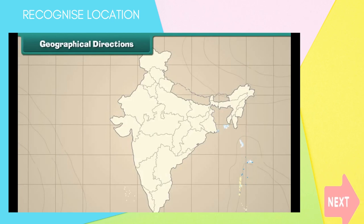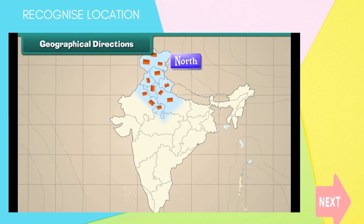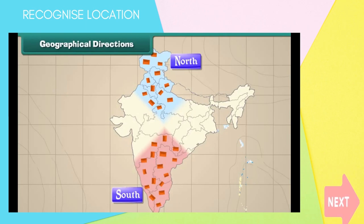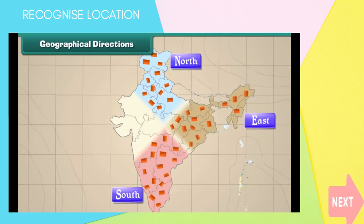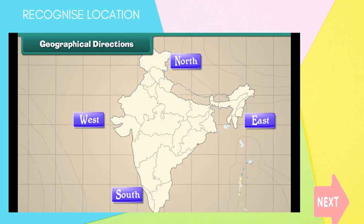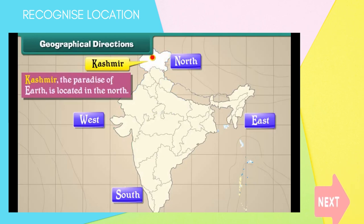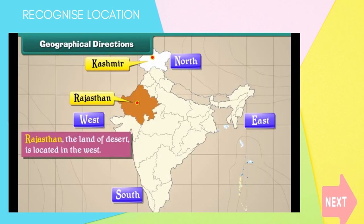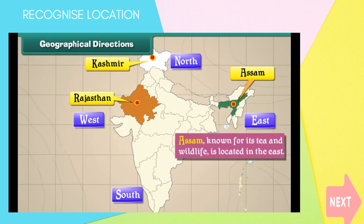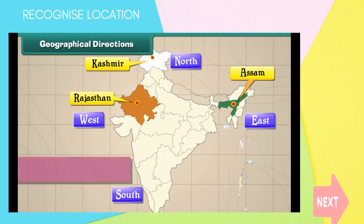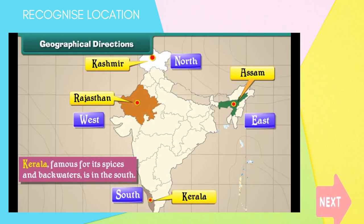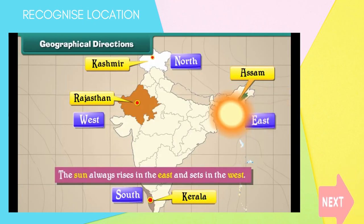Geographical Directions. People live at different places in India. Some places are in the north, while some others are in the south. Some places are located on the east, and some others are on the west. Kashmir, the paradise of earth, is located in the north. Rajasthan, the land of desert, is located in the west. Assam, known for its tea and wildlife, is located in the east. Kerala, famous for its spices and backwaters, is in the south.